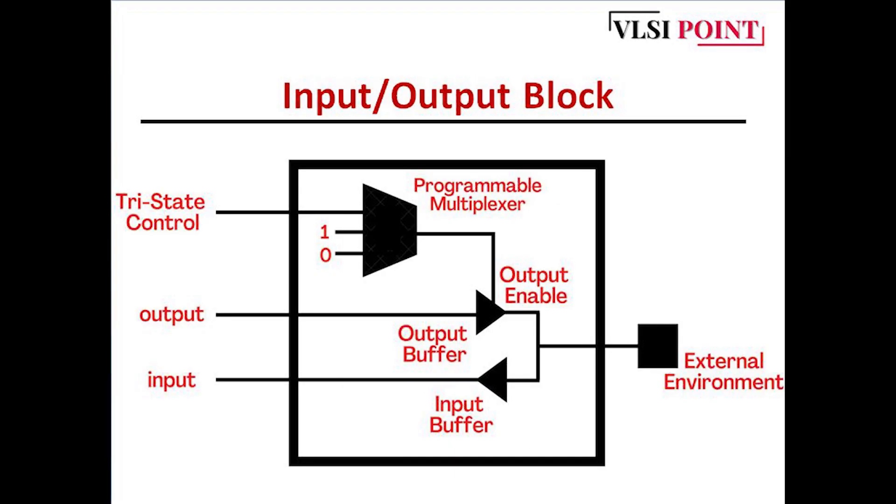The third one is input output block. This is how the block diagram looks. Here we have tri-state control which is given to the multiplexer. This is a programmable multiplexer. Then this is the output enable signal which is given to this output buffer. It is a tri-state buffer and here we have input buffer also. This is an external environment. Let's see how it is working.